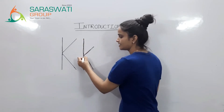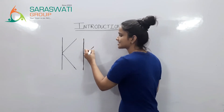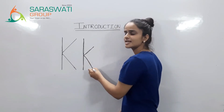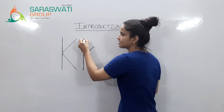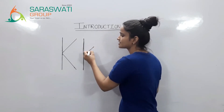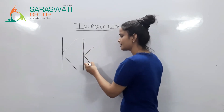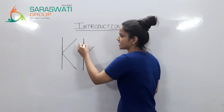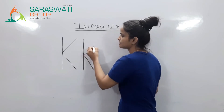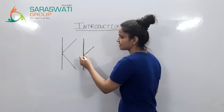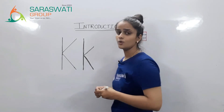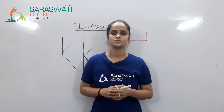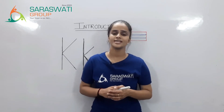Standing line, small slant line and again slant line — lowercase k. So, kids, this is how we all have to do the tracing of lowercase k.